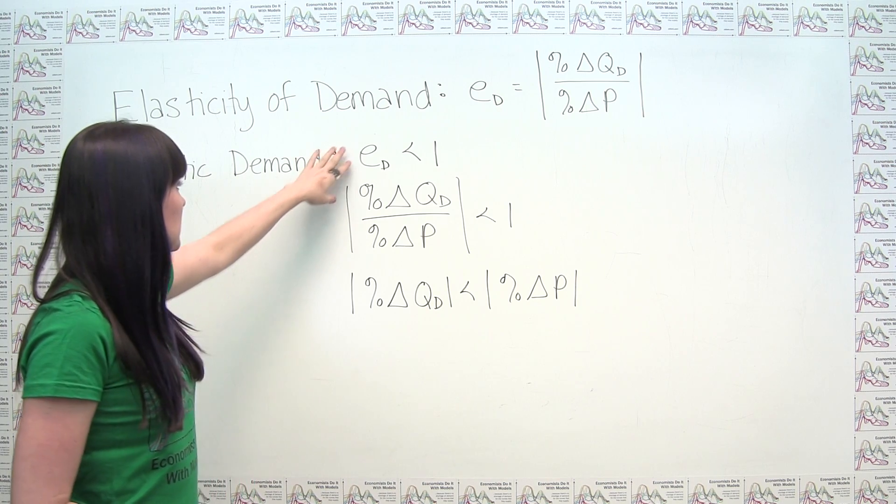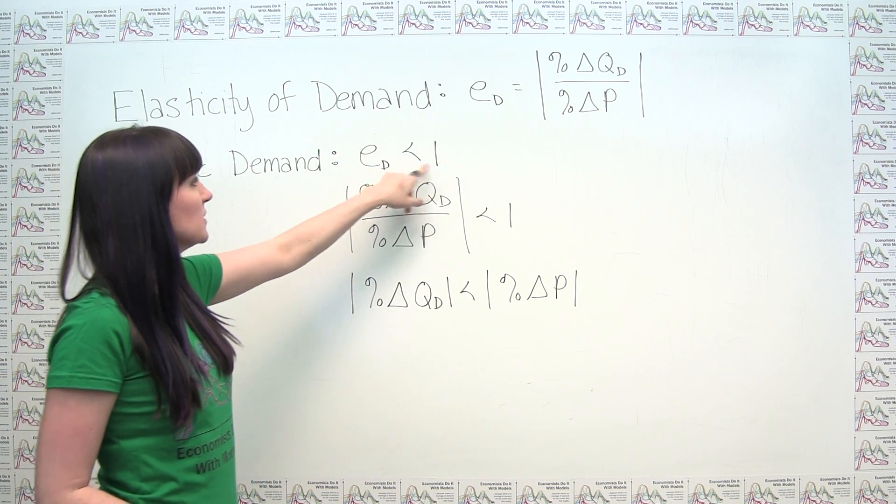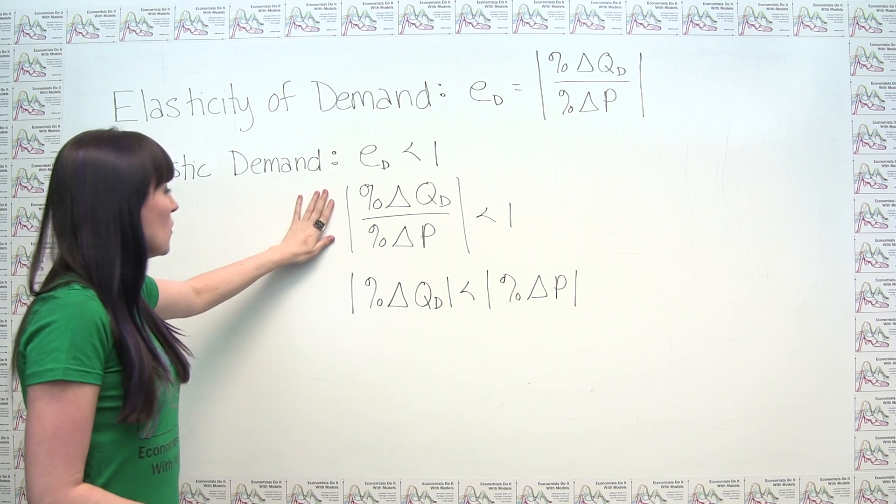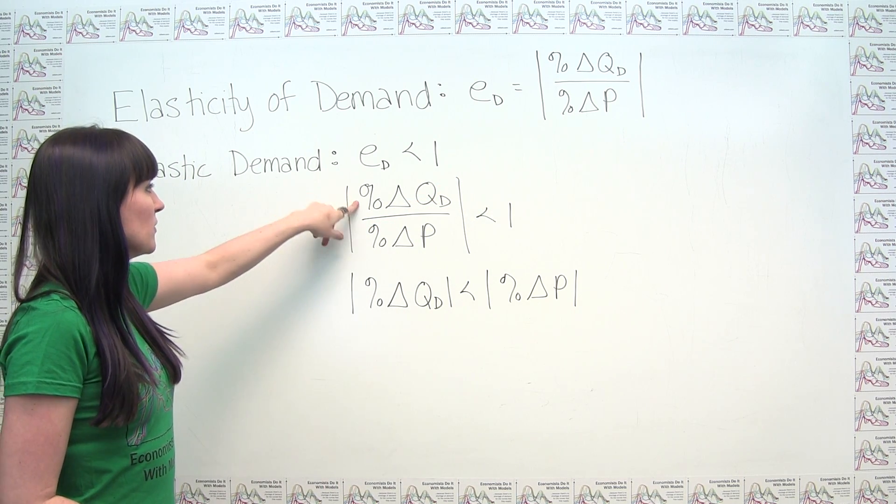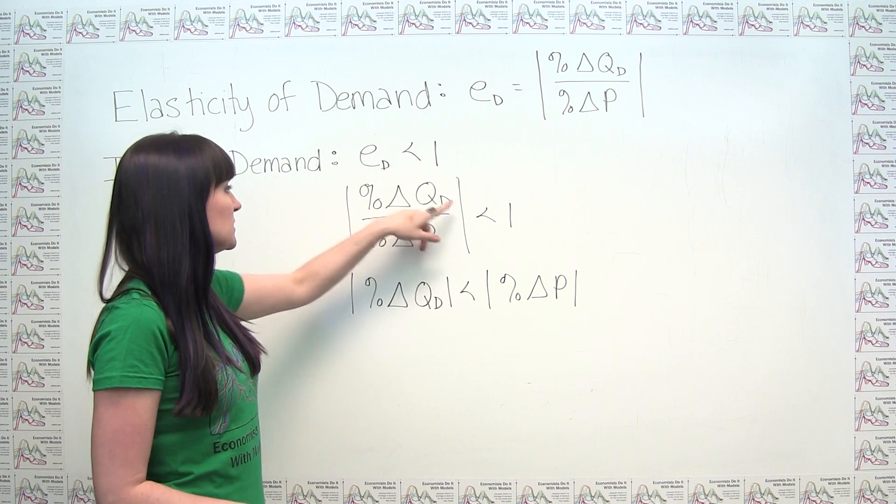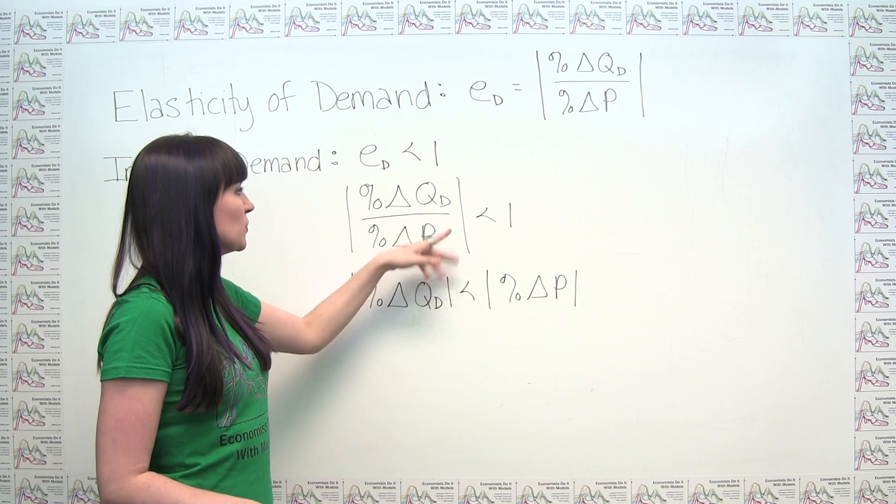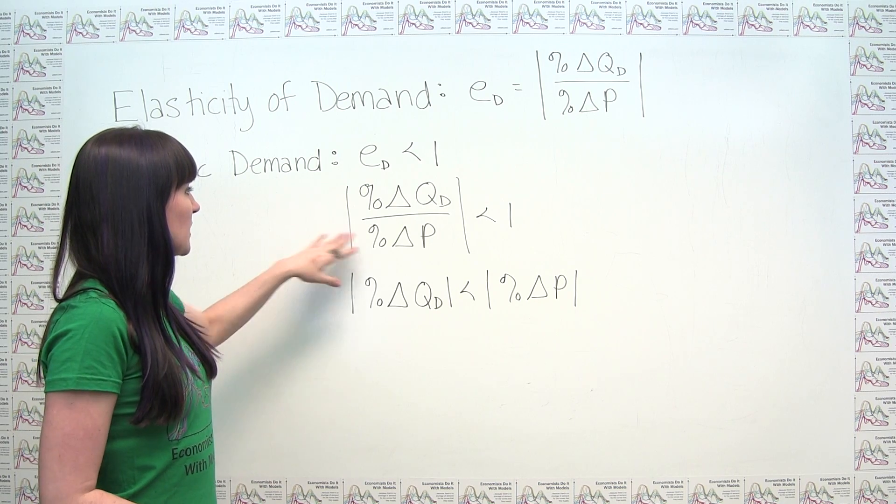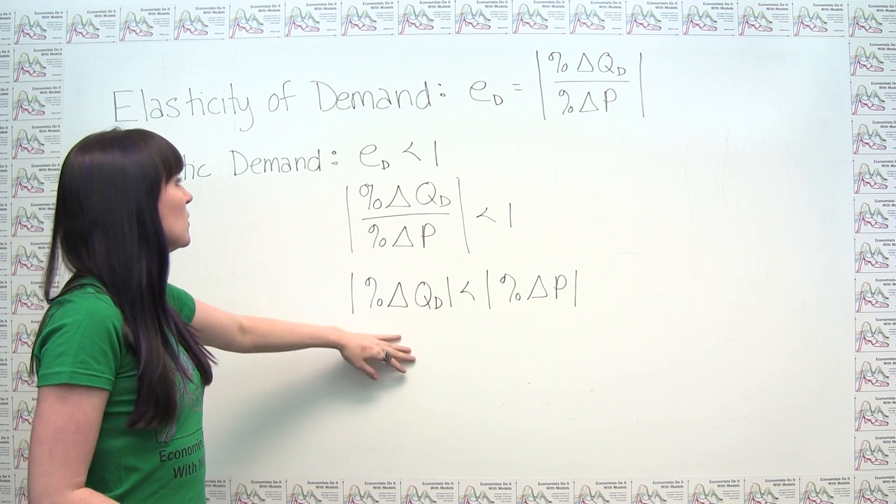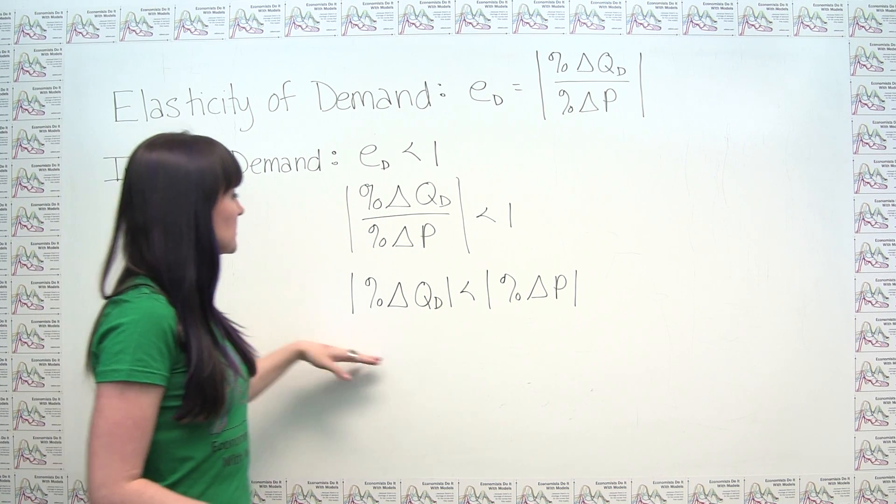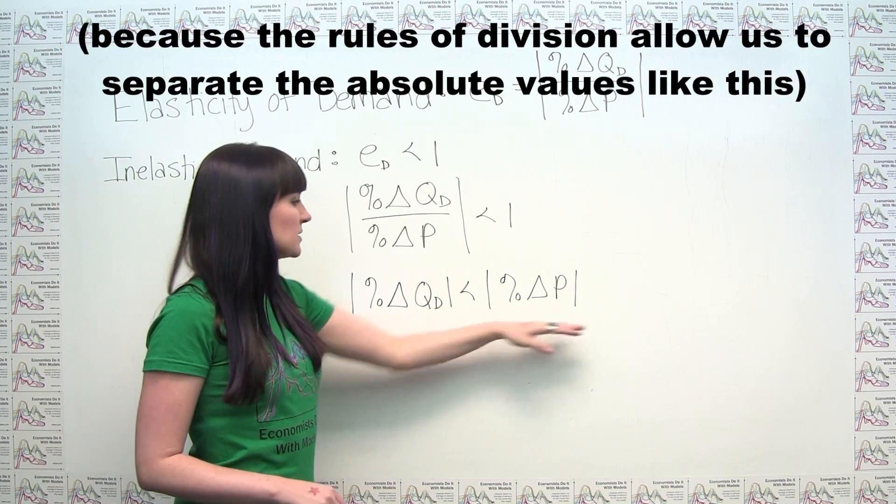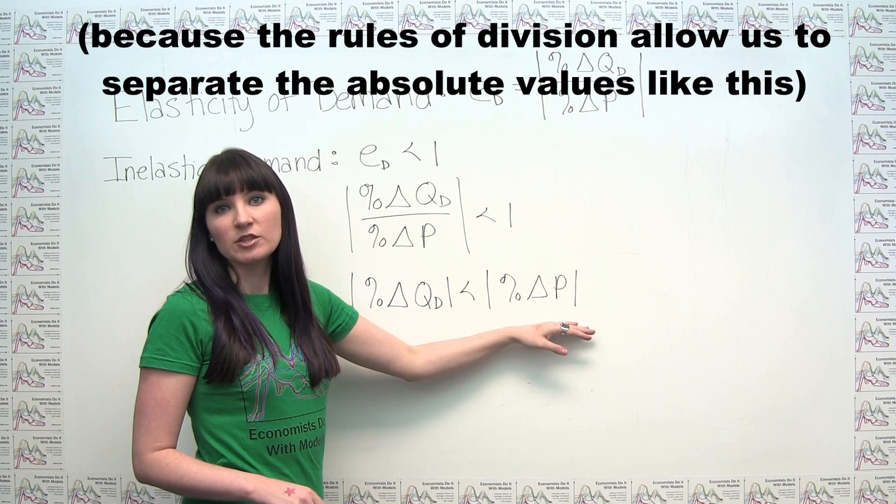What we can notice is that if our elasticity of demand is less than one, then just plugging in the formula here, we can say that the absolute value of the percent change in quantity demanded divided by the percent change in price has to be less than one. And then multiplying both sides by this denominator here, we're going to see that we get inelastic demand when the percent change in our quantity demanded is less than our percent change in price.